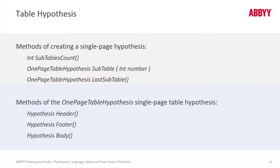We have several methods that can influence how we capture table elements, including a table header or a table footer. A table hypothesis is simply a type used to call a hypothesis of the table element. If you look in Abbey Help for hypotheses for table elements, you will learn all about the many properties of a table hypothesis.